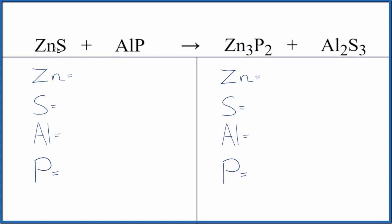Let's balance it. One zinc, one sulfur, one aluminum, and one phosphorus atom in the reactants. In the products, we have three zinc, three sulfur, two aluminum, and two phosphorus atoms.